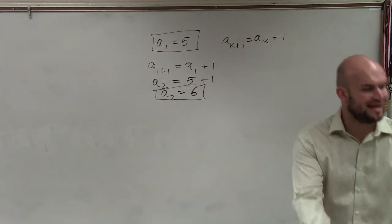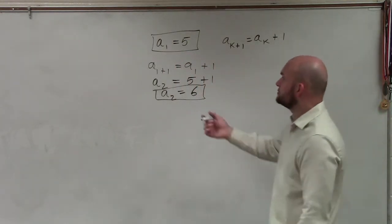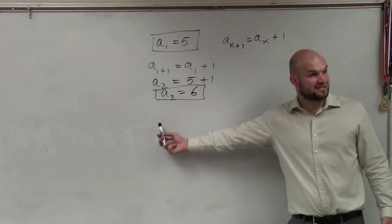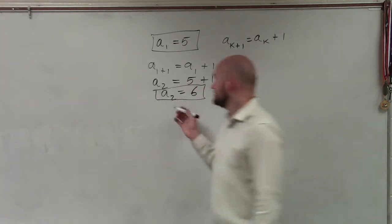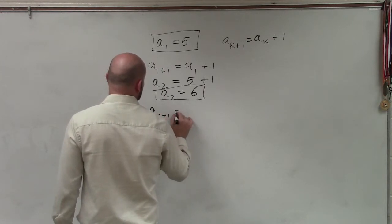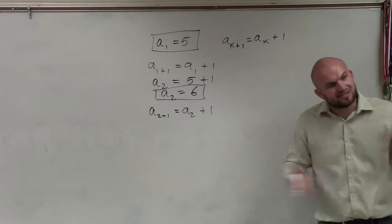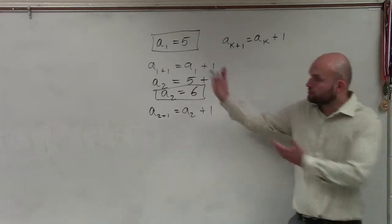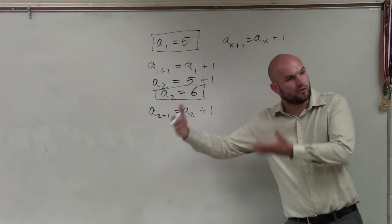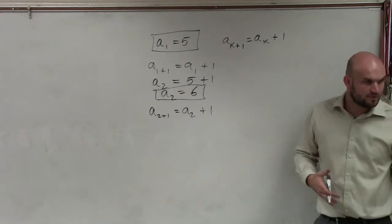Now, to go to a sub 3, we're again going to now plug in the previous term of a sub 2 into our formula. So, I'll do a sub 2 plus 1 equals a sub 2 plus 1. You guys see how all I'm doing is taking the previous term, the previous value that I evaluated for, and now plugging that in. All right?